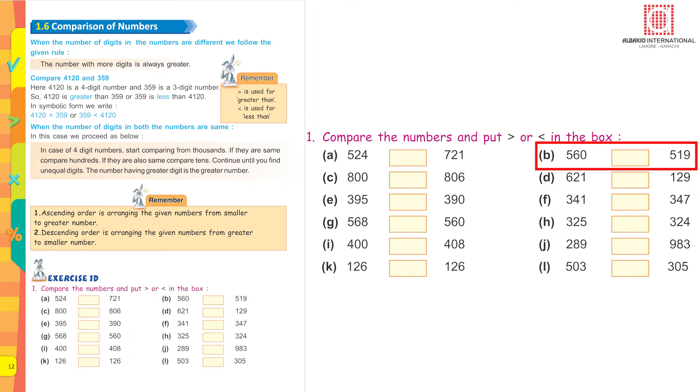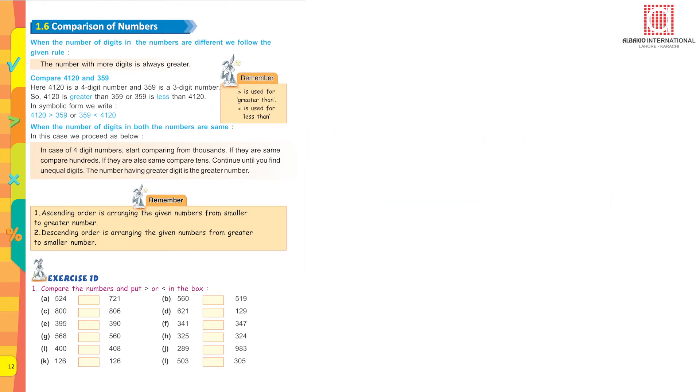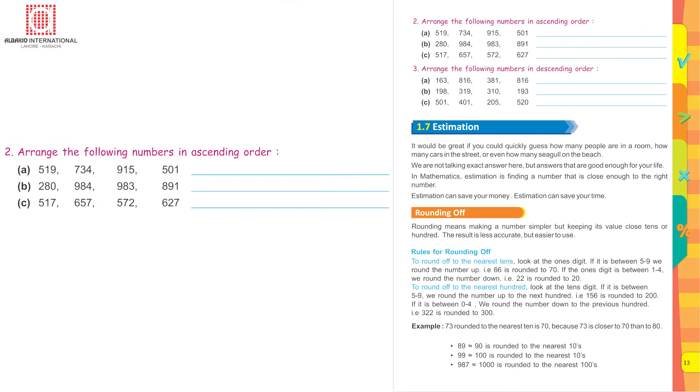This is how you are going to do the rest of the questions. Arrange the following numbers in ascending order. Now ascending order is arranging the given numbers from smaller to greater number.